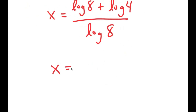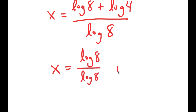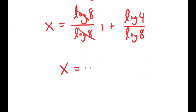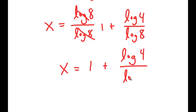This turns into log 8 over log 8 plus log 4 over log 8. Now, these two log 8 terms cancel out to get 1. So I get x is equal to 1 plus log of 4 over log of 8.